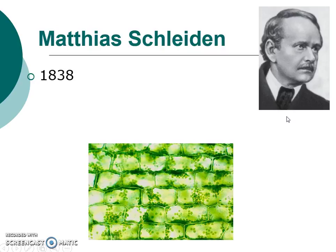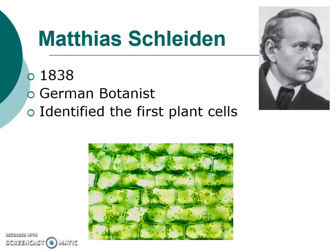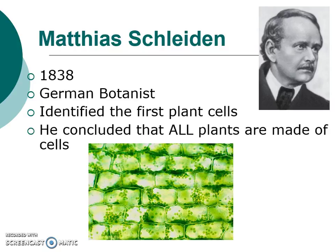Then, in 1838, a guy by the name of Matthias Schleiden — he was a German botanist, botanist meaning the study of plants — identified the first plant cells and concluded that all plants have to be made of cells too. You can see those; those are plant cells right there.